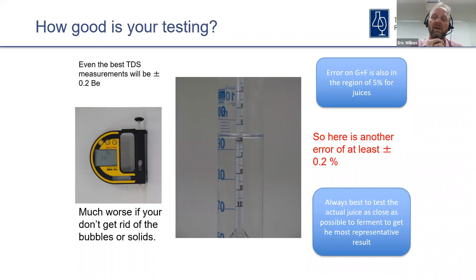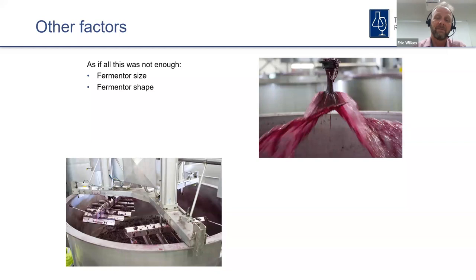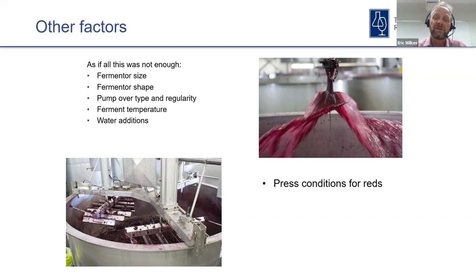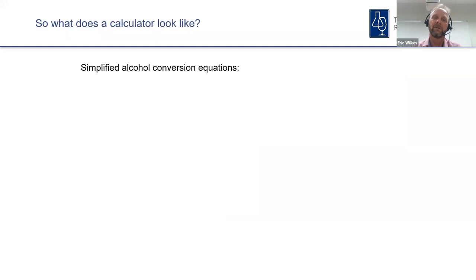Always test the actual juice as close as possible to fermentation to get the most representative result. Other factors also impact alcohol conversion including fermenter size and shape — which both affect conversion rates — pump-over type and regularity (vigorous pump-overs exposing wine to air allow ethanol to volatilize off), fermentation temperature (affects how much ethanol is carried away with CO2), water additions, press conditions for reds, degree of bound sugars on reds, and degree of aeration.